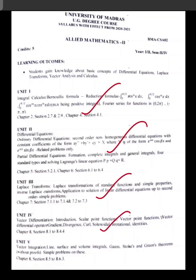Unit 5 is vector integration. Unit 4 is vector differentiation, and Unit 5 is vector integration — line, surface, and volume integral. Gauss theorem, Stokes theorem, Green's theorem — without proofs. These are simple problems and all important topics.